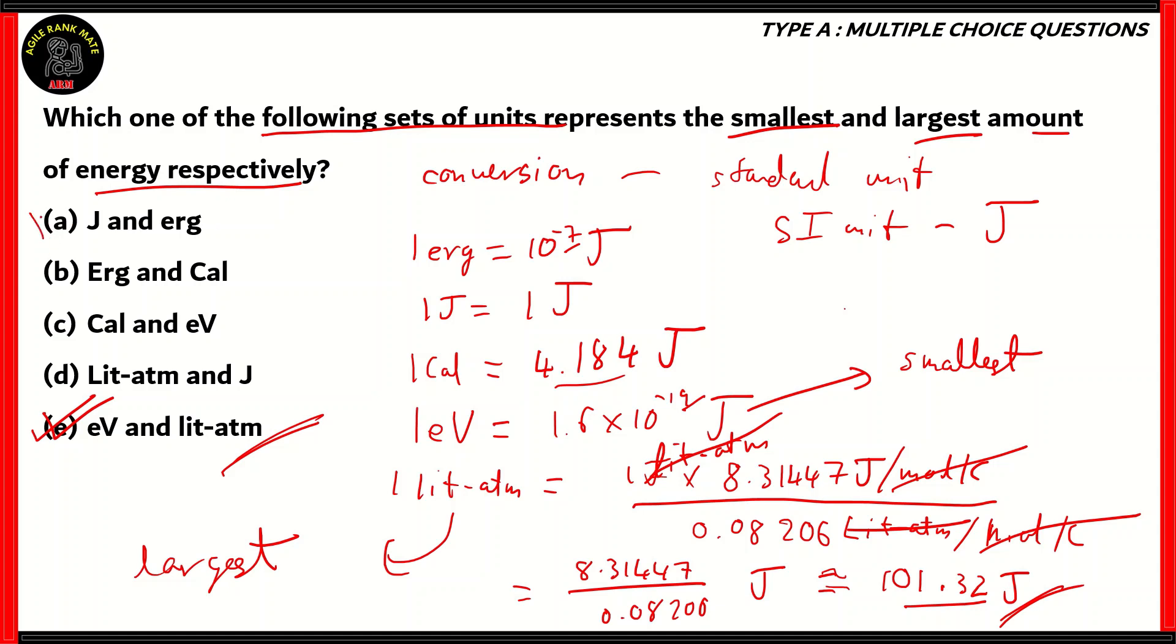A says joule and erg which is incorrect. B says erg and calories which again is incorrect. The reason being that erg is not the smallest while calories are not the largest. If we look at option C, it says calories and electron volts. Calories are larger than electron volts, so that's wrong. Option D says liter atoms and joules. Liter atoms are bigger than joules. The only option here which is correct is option E, electron volts and liter atoms. And this we found out by using common conversions to get the value of each unit in the standard unit, which is joules.